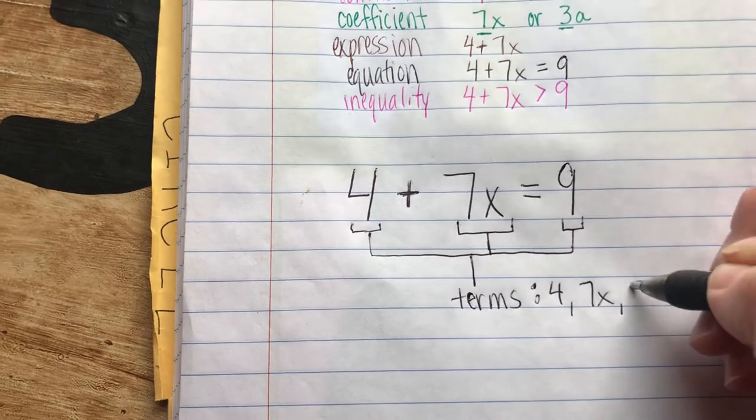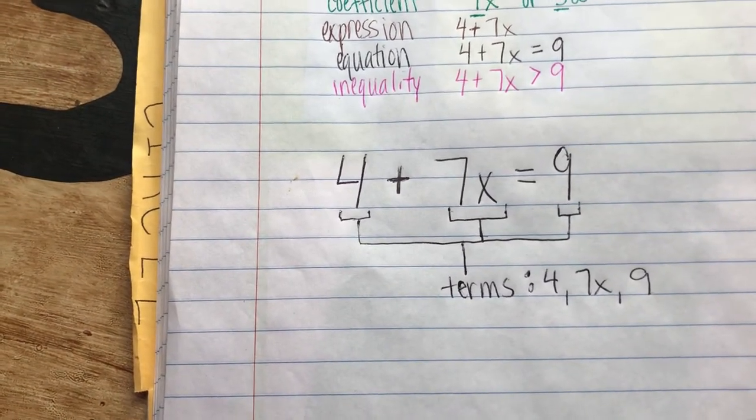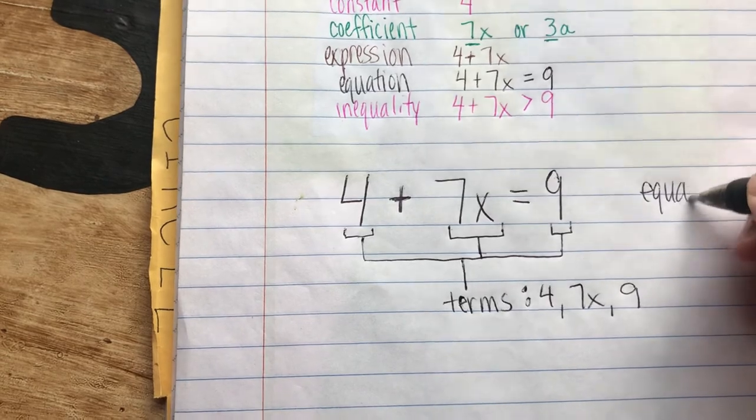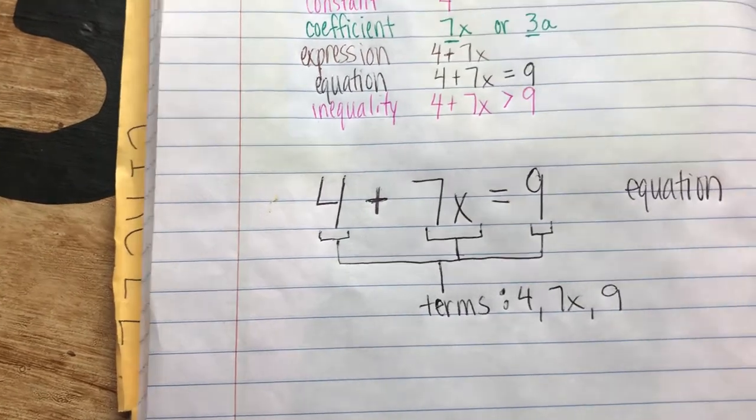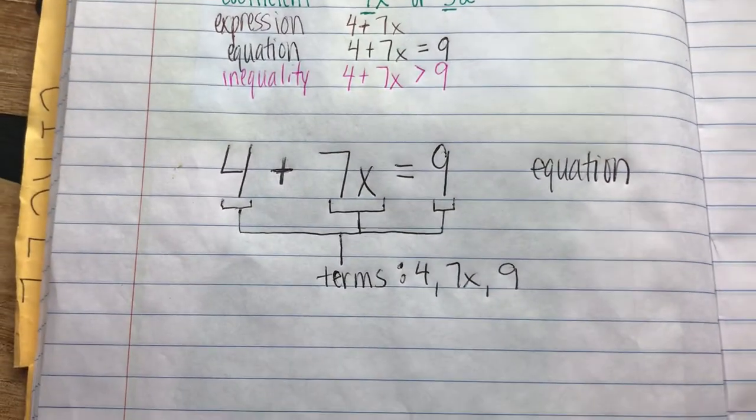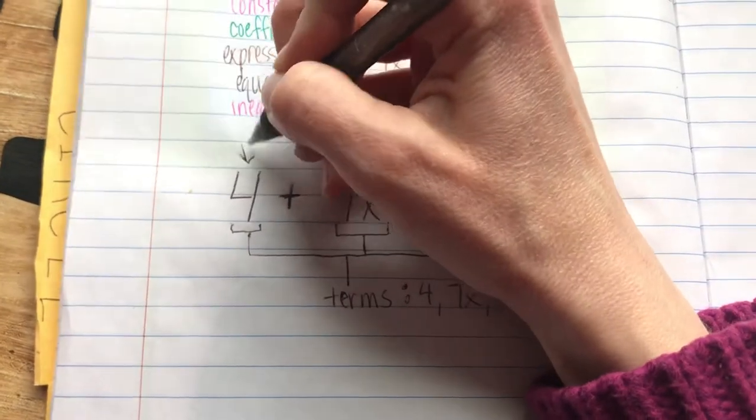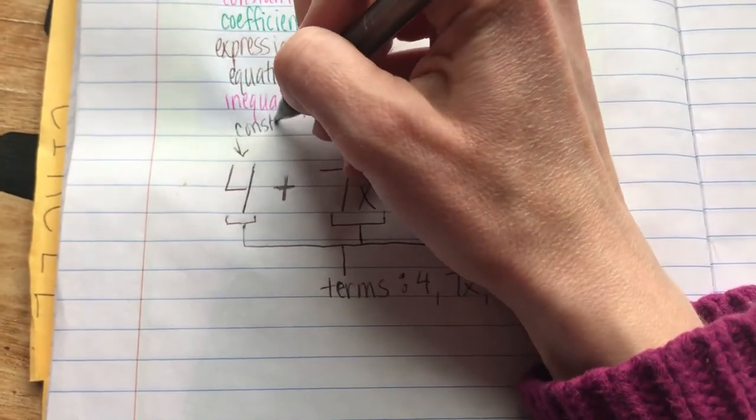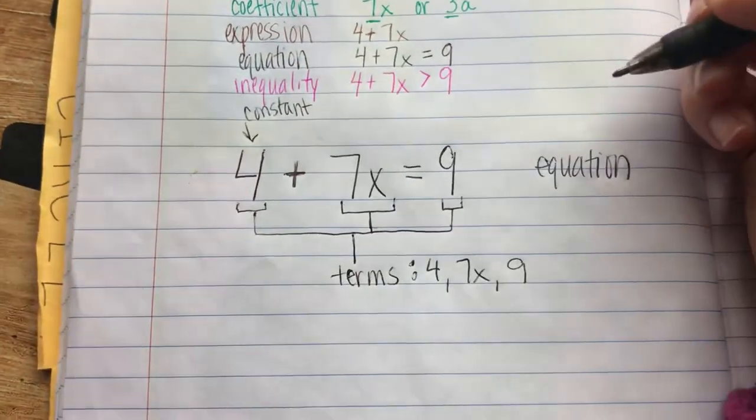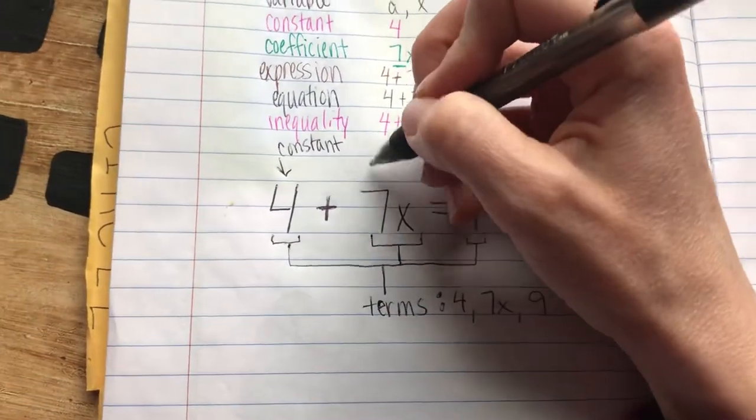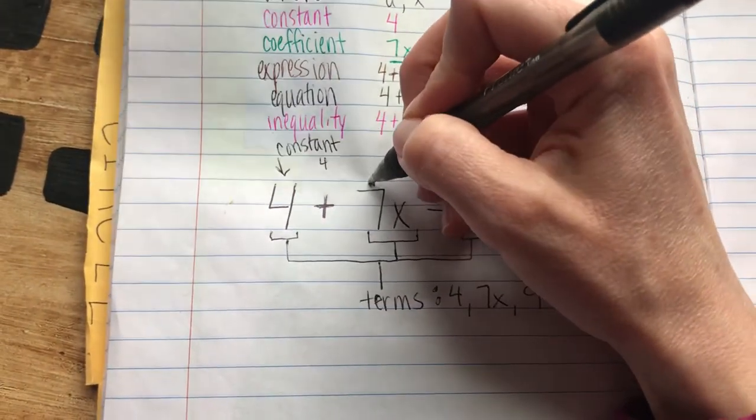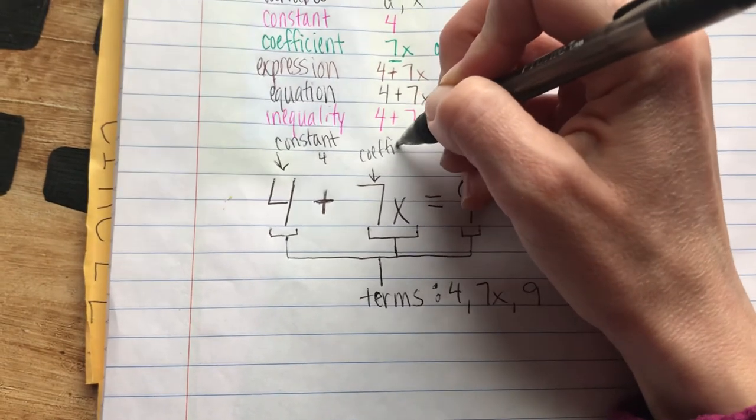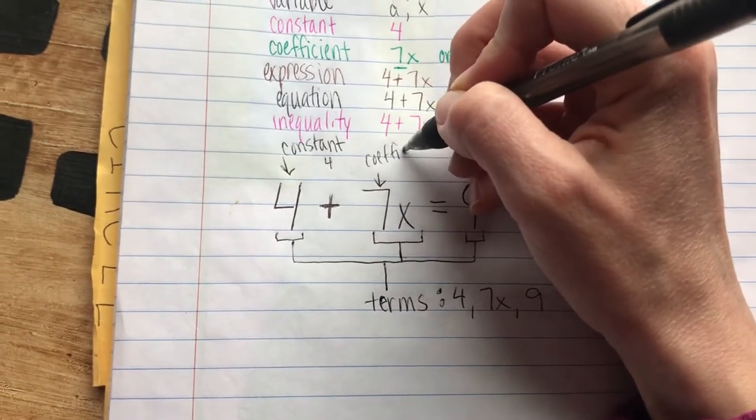This whole thing is an equation. We have a constant in this equation—that's the number 4. We have a coefficient, that's the number 7.